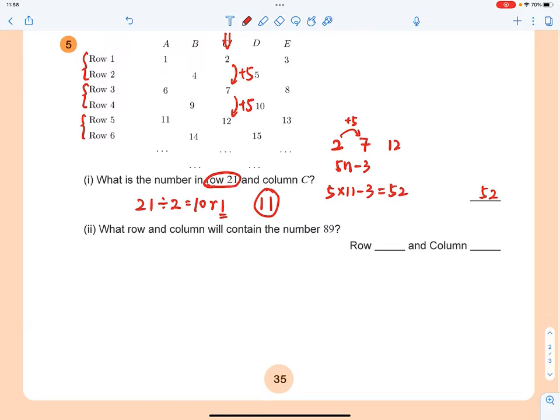Second question: what row and column will contain the number 89? For each cycle, that's 2 rows, you got 5 numbers. So divide 89 by 5 and see what you get.